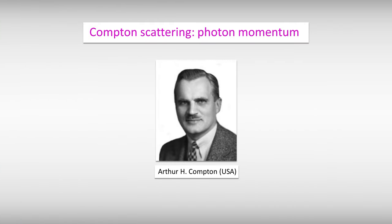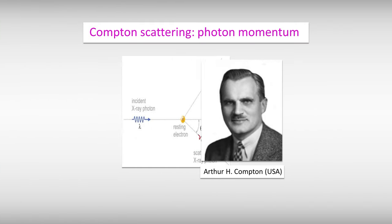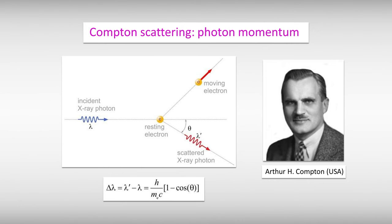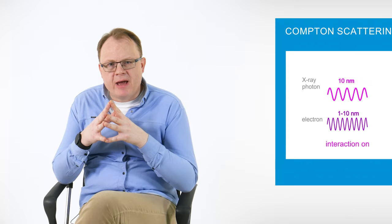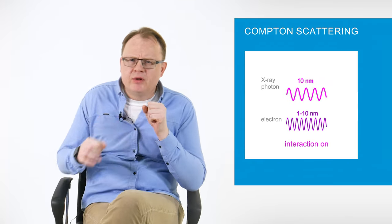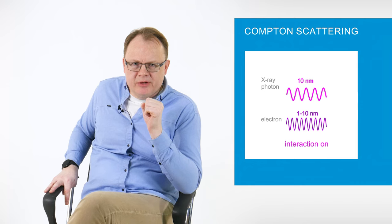100 years ago in 1923, American physicist Arthur Compton first demonstrated the existence of momentum of an X-ray photon scattered by a free electron in metal and was awarded the Nobel Prize in Physics in 1927. This effect was possible due to electron-photon momentum matching. The wavelength of both was approximately equal to 10 nanometers.